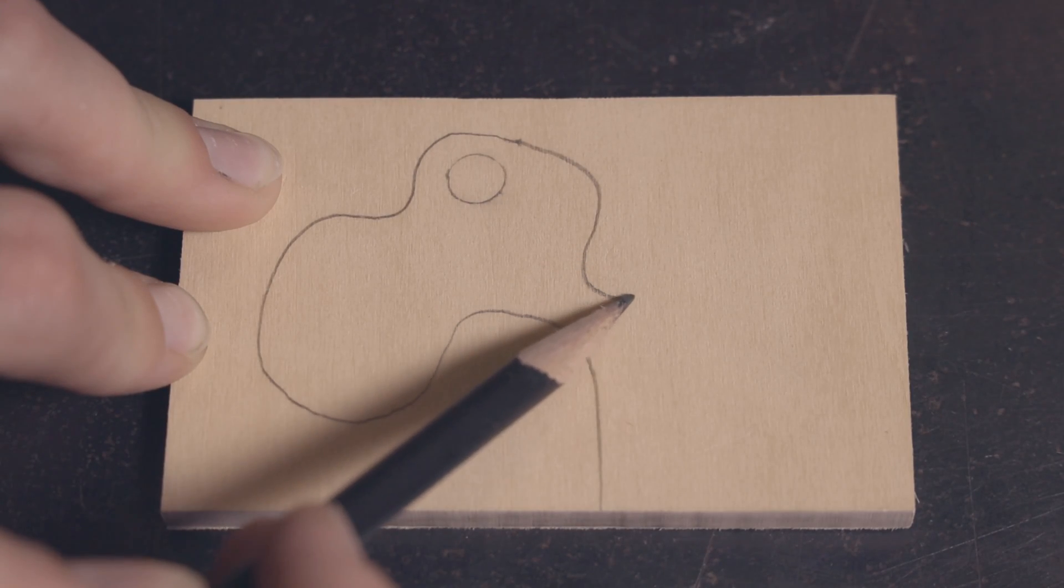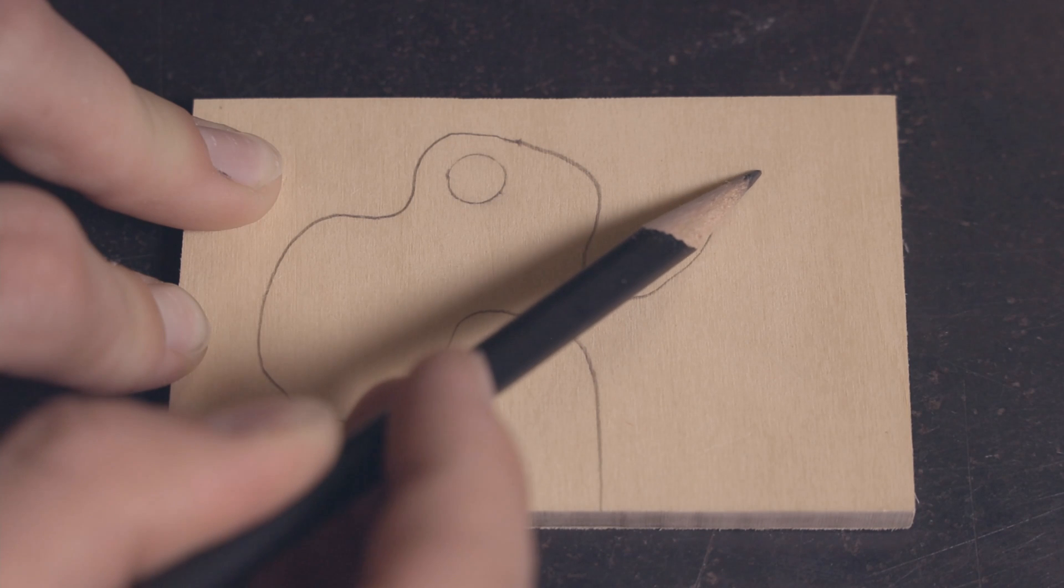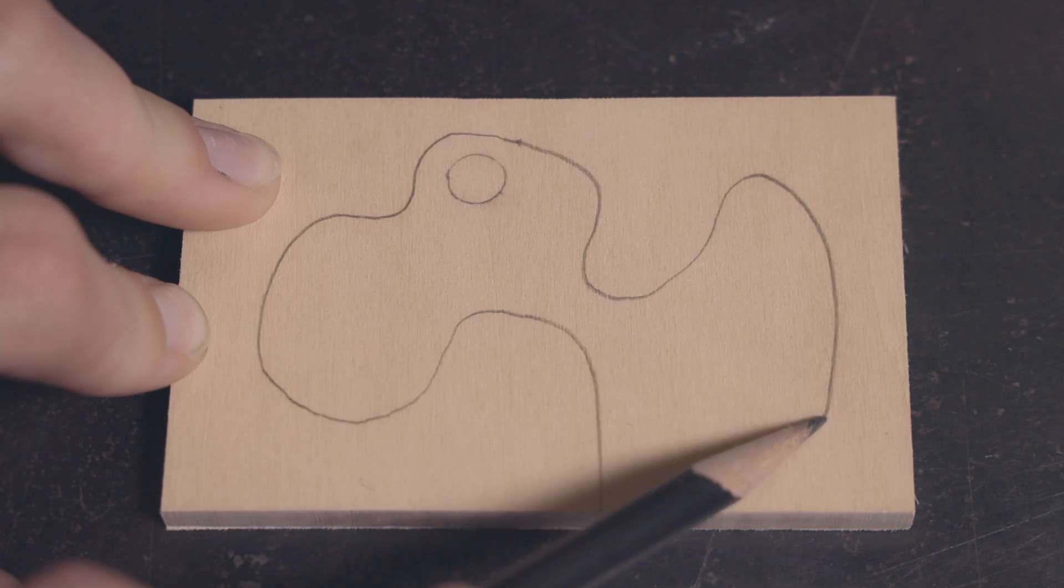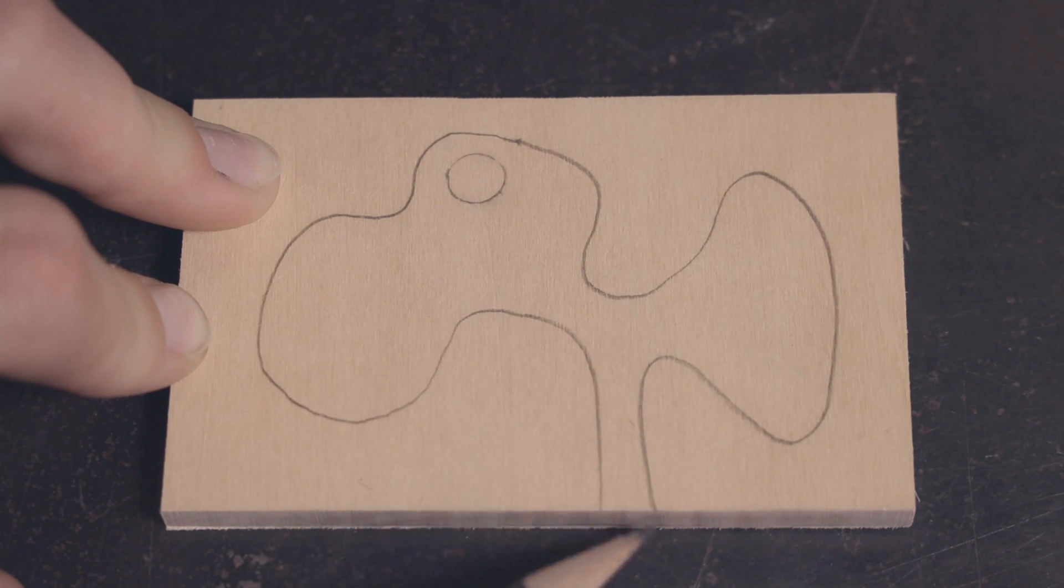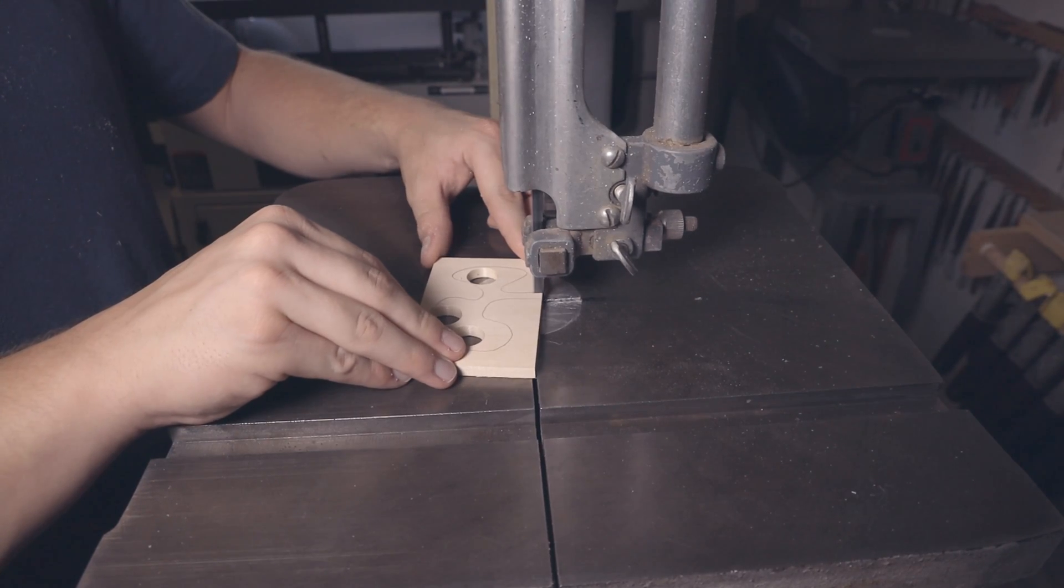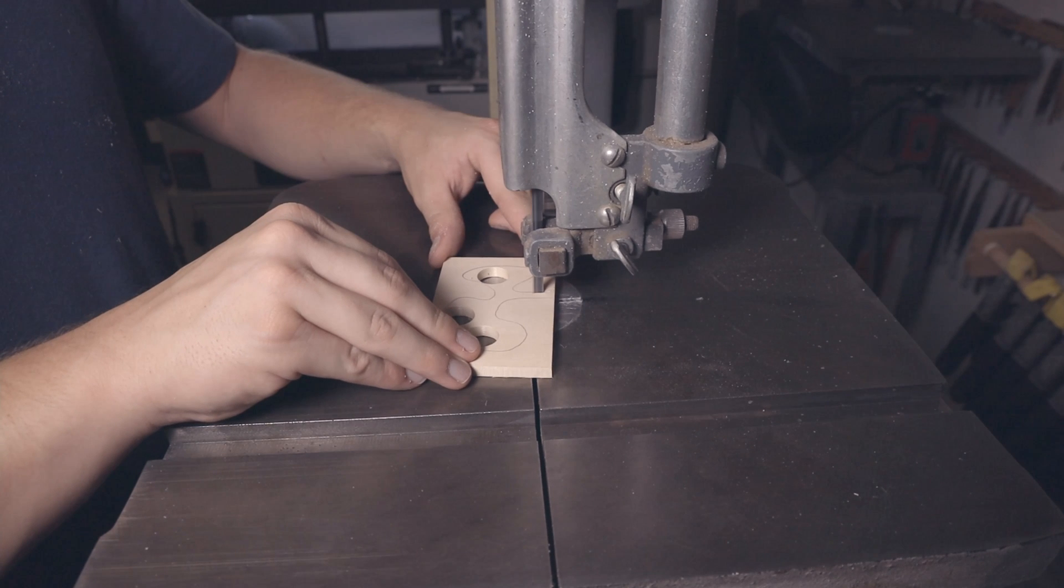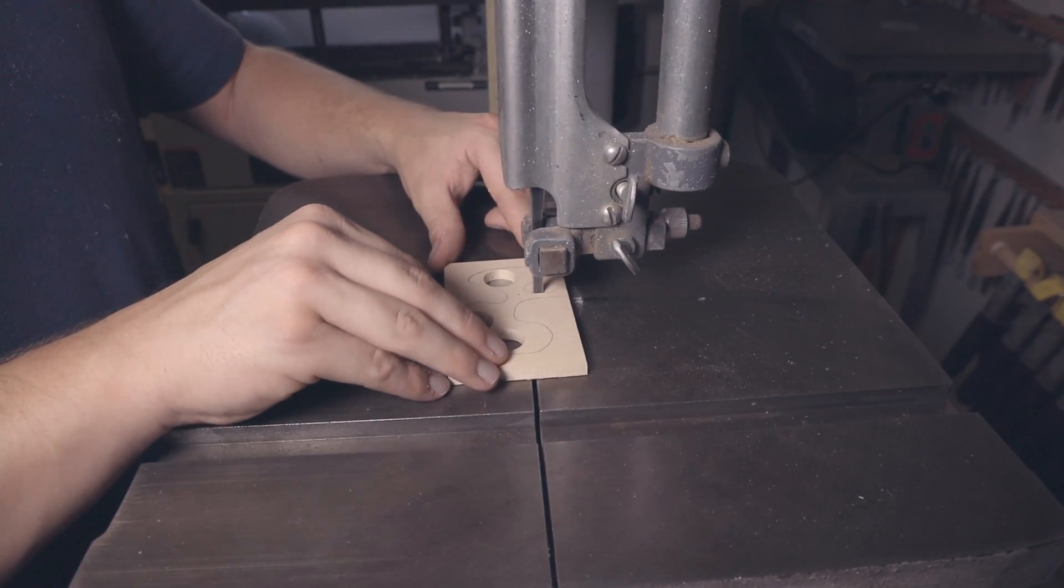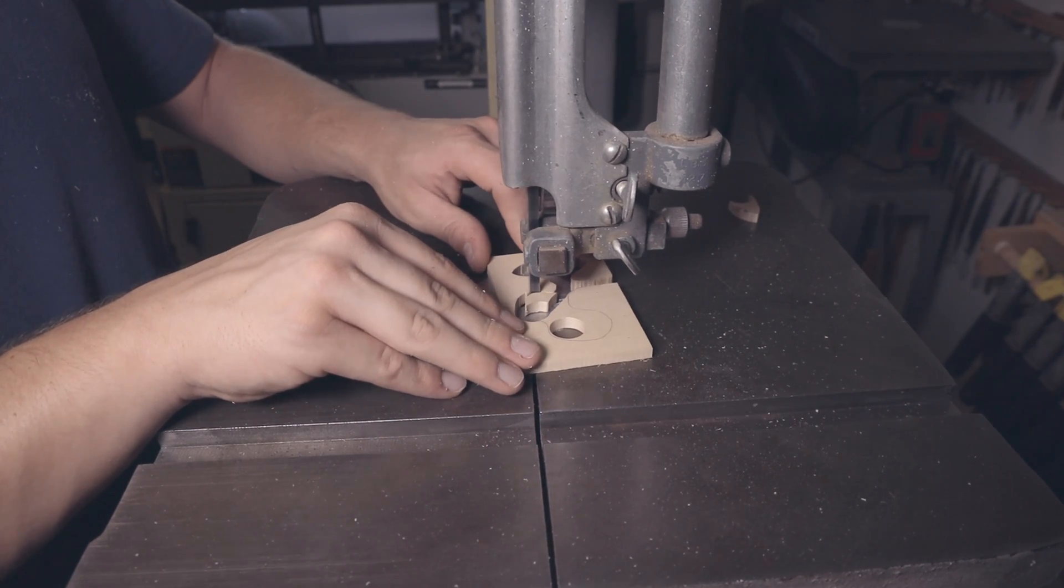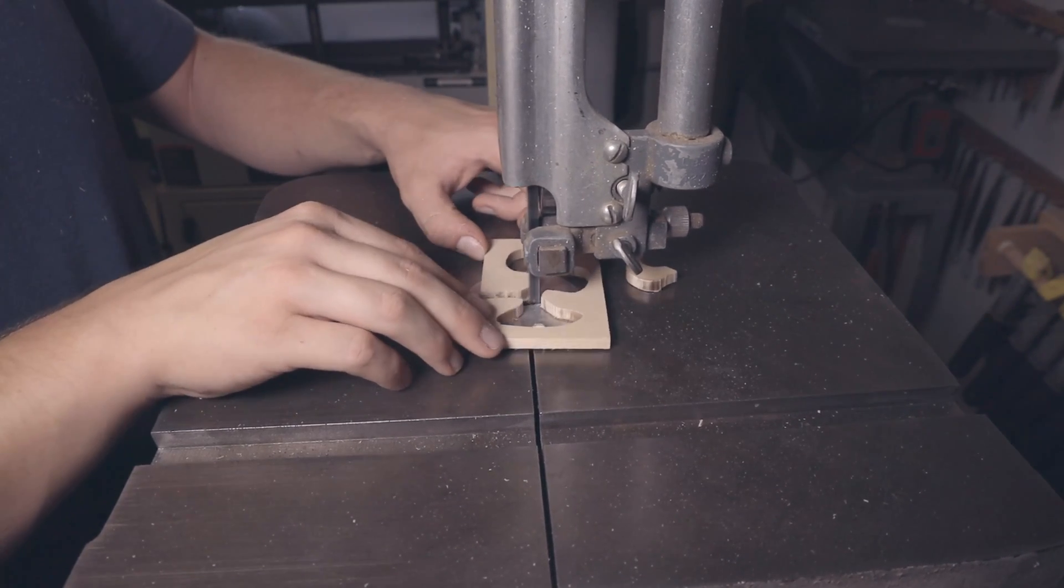I'm going to sketch the tunnels and chambers using a pencil. Because this is only for a queen and an incipient colony, I'm going to keep it fairly small. You can use a rotary tool like a Dremel to create the chambers in the wood, but I'm going to carefully cut mine using a band saw. Always wear protection and ask for help if you don't have experience using power tools.